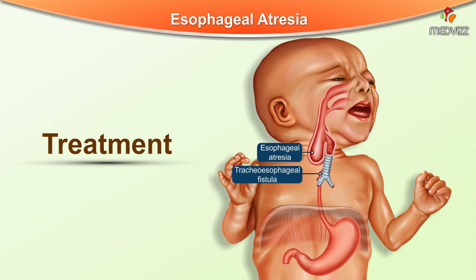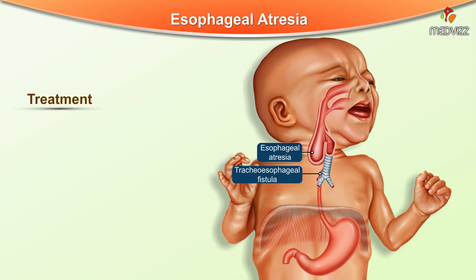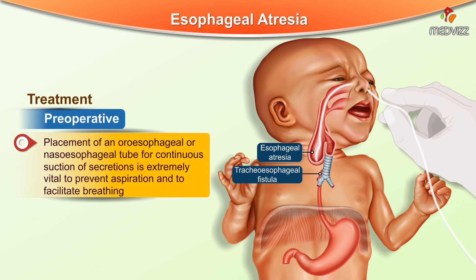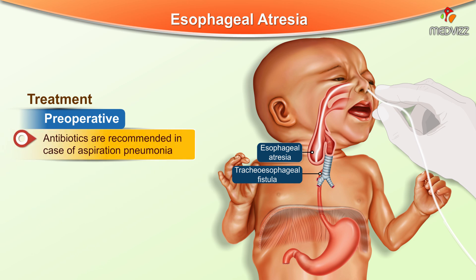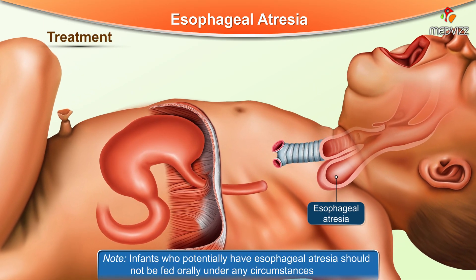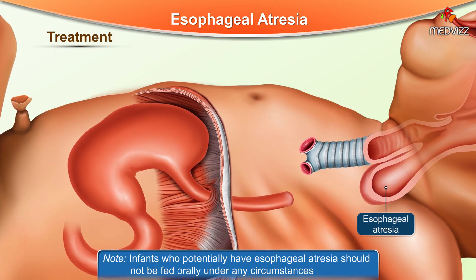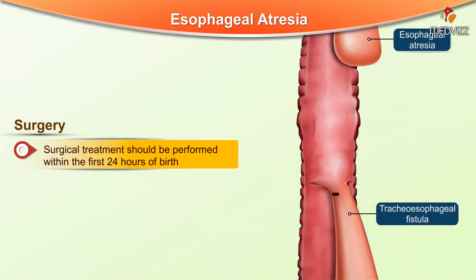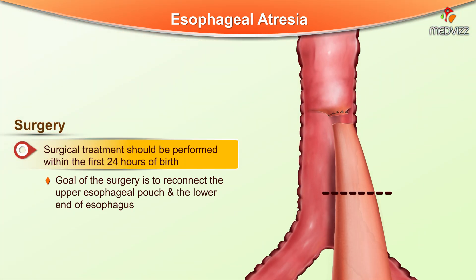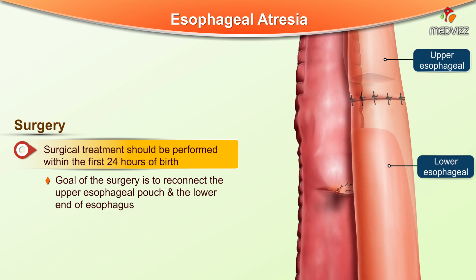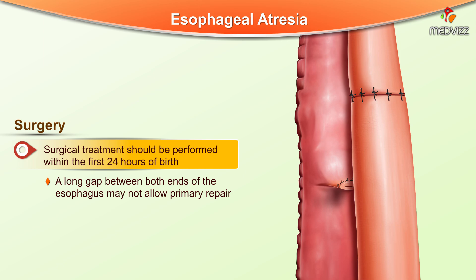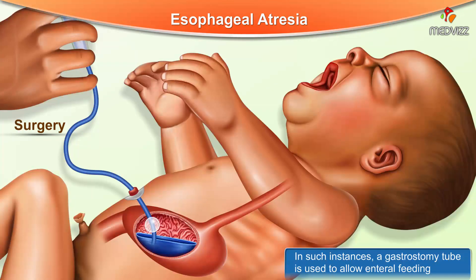For treatment of esophageal atresia with tracheoesophageal fistula, preoperatively an oroesophageal or nasosophageal tube should be placed for continuous suction of secretions to prevent aspiration and facilitate breathing. Antibiotics are recommended in cases of aspiration pneumonia, and infants should not be fed orally under any circumstances. Surgical treatment should be performed within the first 24 hours of birth, aiming to reconnect the upper esophageal pouch with the lower end. If a long gap exists, a gastrostomy tube is used to allow enteral feeding.